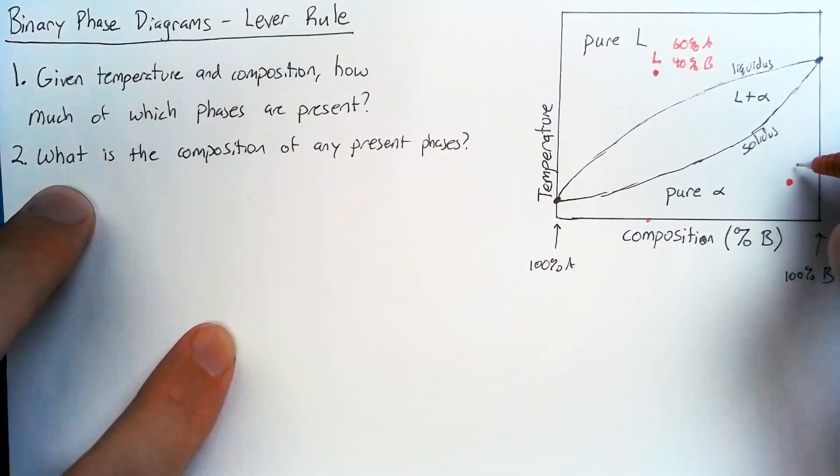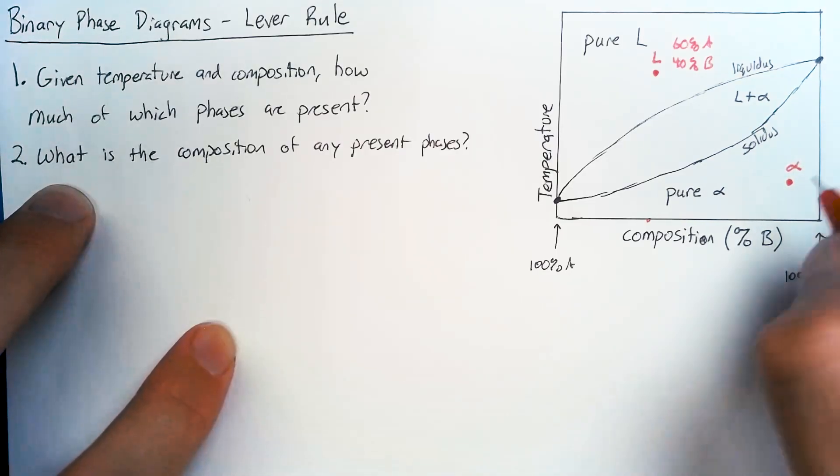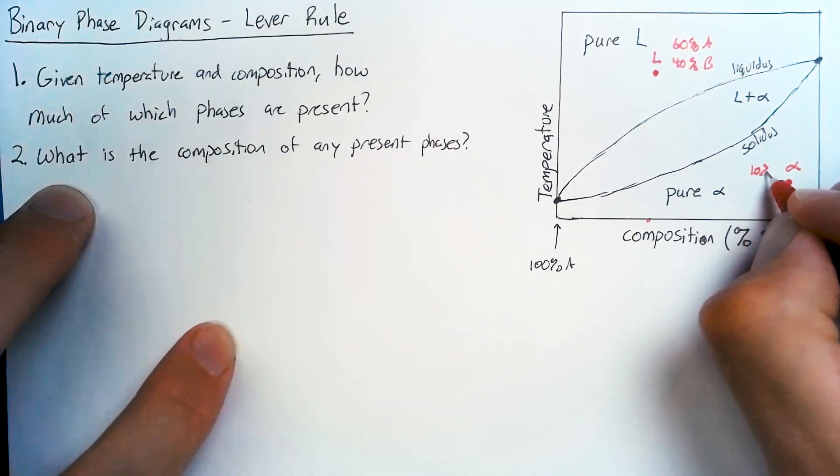Over here, it's easy to see that this is pure alpha. And again, the composition of that phase, that alpha phase is going to be the same as the overall composition, meaning that this is roughly 10% A and 90% B.